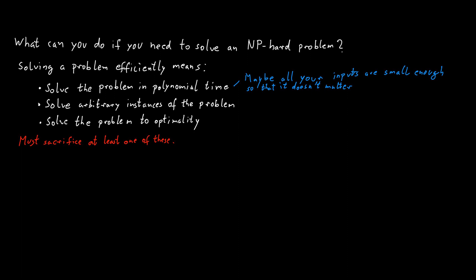You might also not have to solve arbitrary instances of the problem. It's possible that you defined your problem in a too general way and you didn't really use everything you know about the instances you will encounter in the real world. Maybe the instances you encounter in the real world have some extra special properties you can exploit to develop more efficient algorithms for those types of inputs specifically.